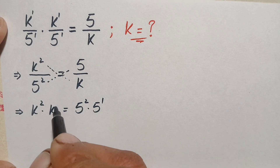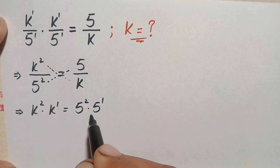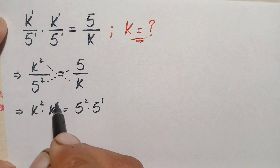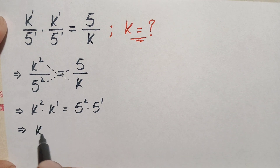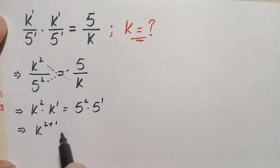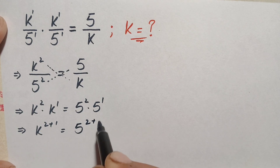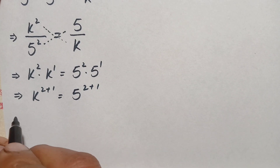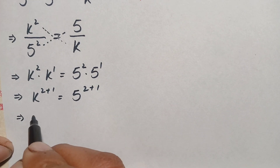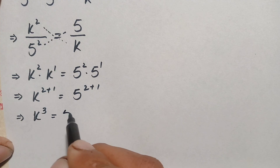Here the power of this variable is 1 on both sides, and the bases are the same, so we will add the powers. This becomes k raised to power 2+1 equals 5 raised to power 2+1, which gives us k cubed is equal to 5 cubed.